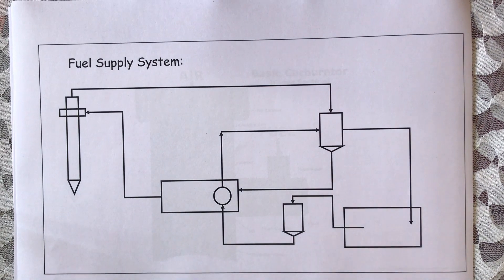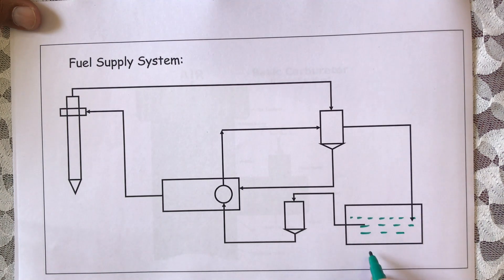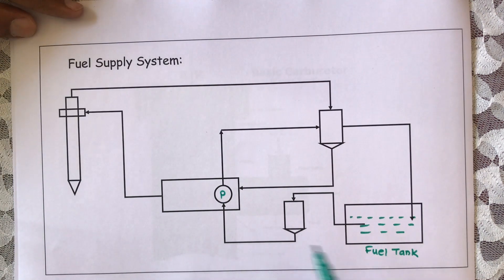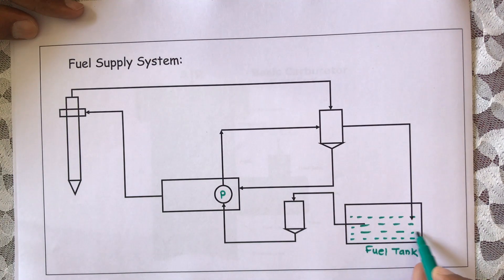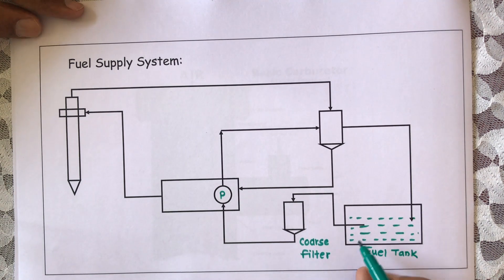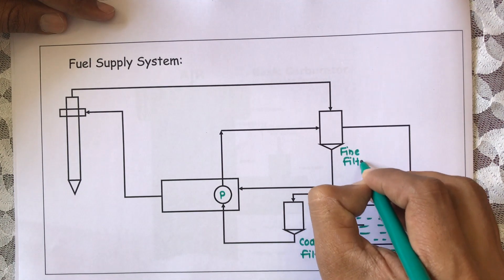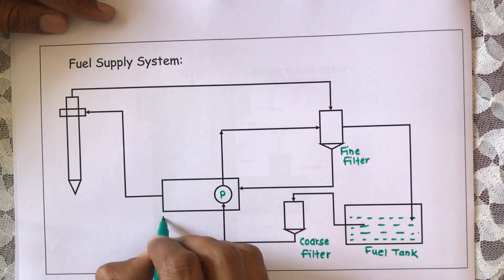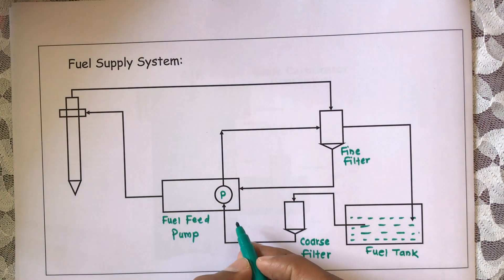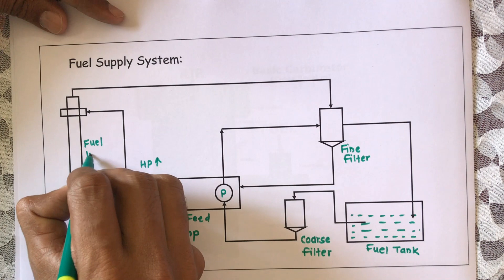Let us study how we are going to supply the fuel to any engine. This is the fuel tank. From the fuel tank, with the help of a pump, we are going to pump the required amount of fuel through this coarse filter. Then the pumped fuel is supplied to one more filter, that is the fine filter. The filtered fuel from the fine filter will be supplied to the fuel feed pump.